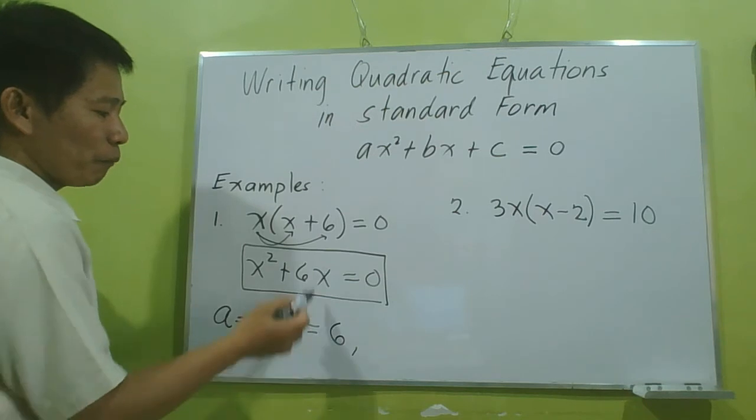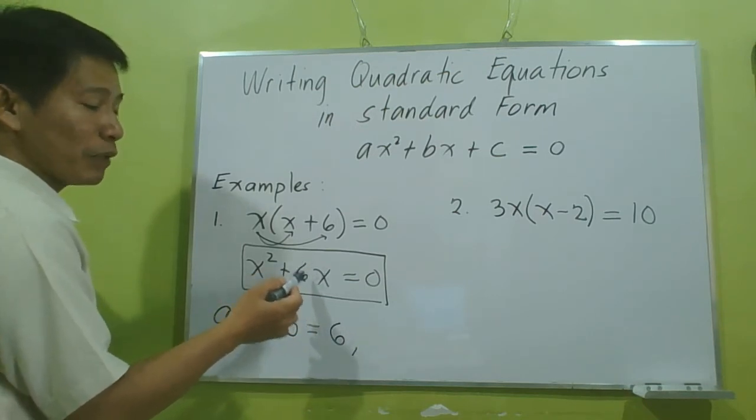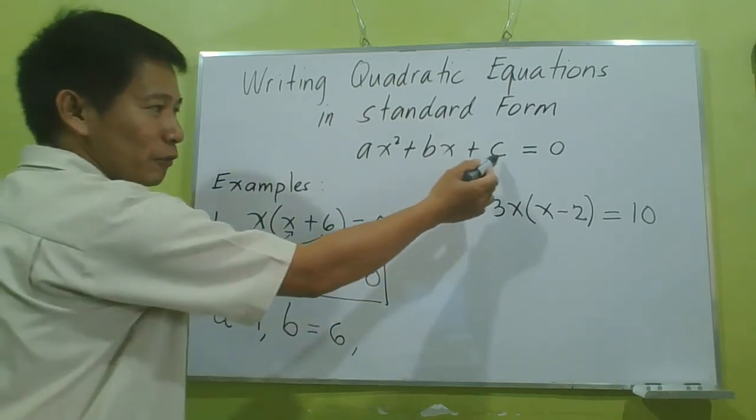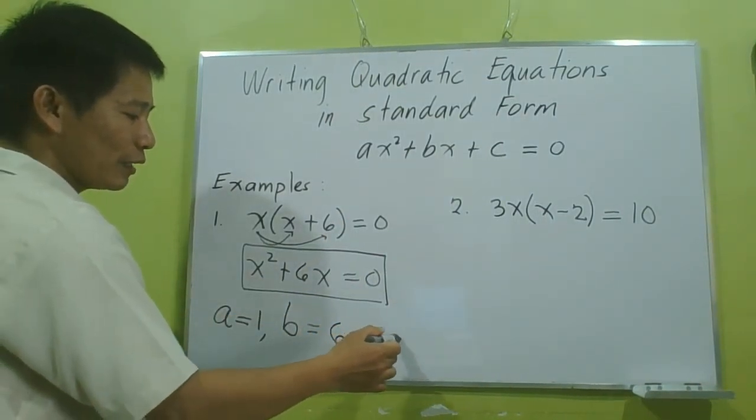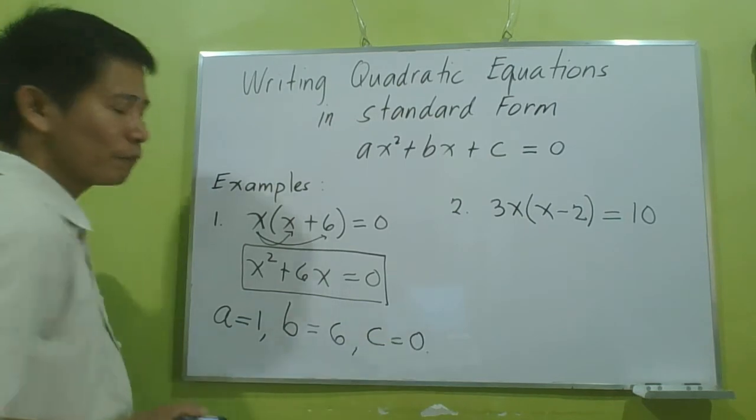As you will observe, there is no constant term here, so there is no value of C compared to the standard form. Meaning, the value of C is 0.